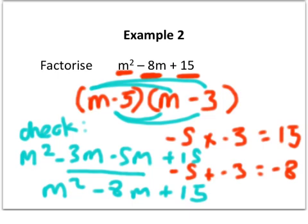If we just review again what we've done here, our job was to factorise m squared minus 8m plus 15 into two brackets, and we've done that. One bracket is m minus 3, one bracket is m minus 5.